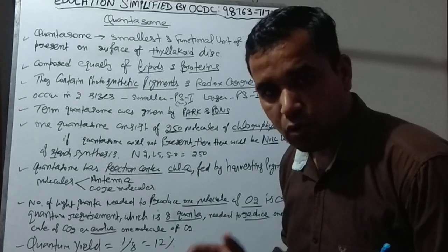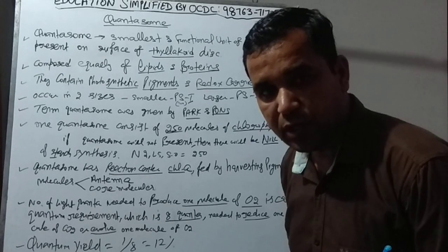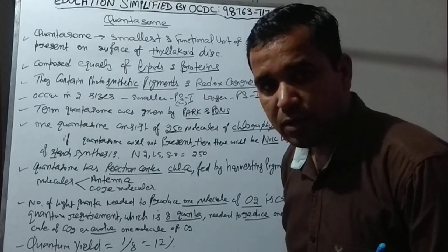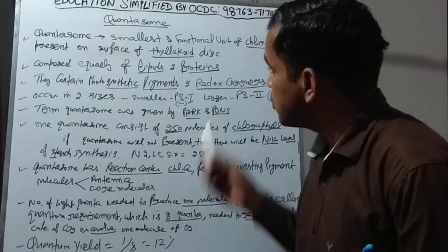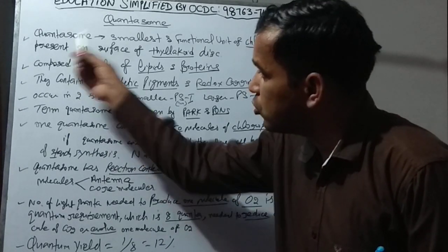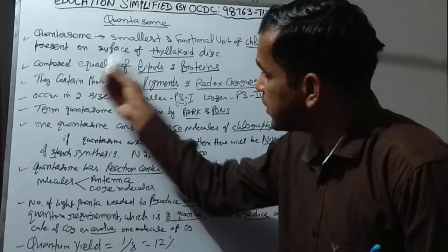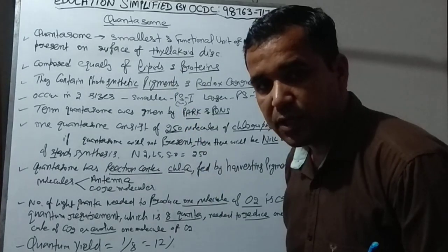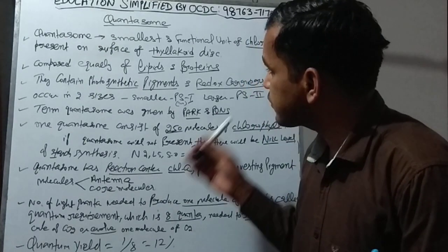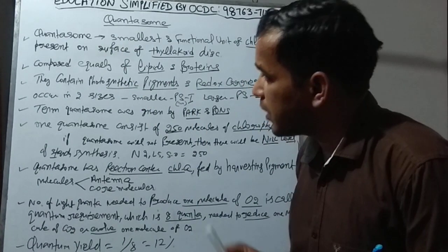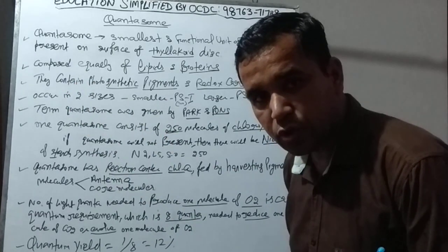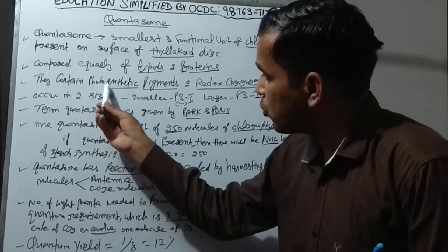Chromoplast contains various colors, leucoplast is without color (white), and chloroplast is green. Chloroplast is responsible for photosynthesis and contains chlorophyll. The smallest functional unit of chloroplast is called quantasome, which is present on the surface of the thylakoid disk. The group of thylakoid disks is called grana. Quantasome contains a specific amount of lipids and proteins.